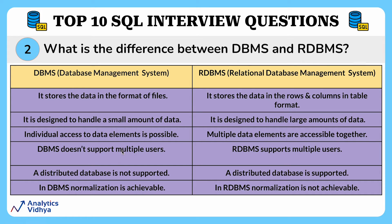Next, DBMS doesn't support multiple users, whereas RDBMS does support multiple users. A distributed database is not supported within DBMS, whereas in RDBMS a distributed database is supported. And lastly, in DBMS normalization is achievable, whereas in RDBMS normalization is not achievable. To further clarify this last point, normalization is the process of minimizing redundancy from a relation or data. These are basically the key differences between RDBMS and DBMS.